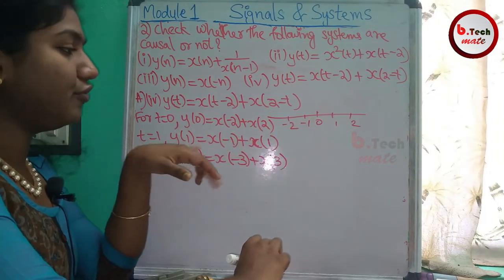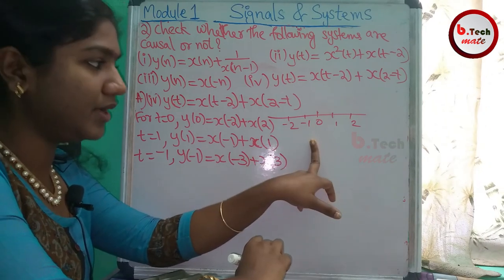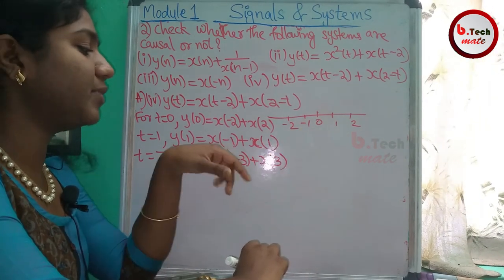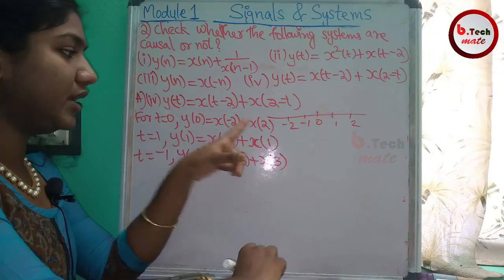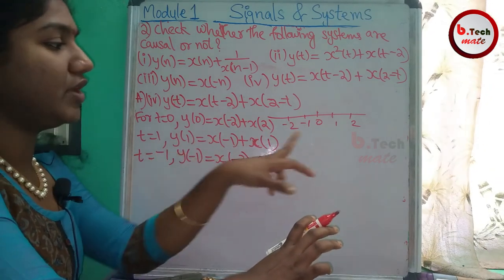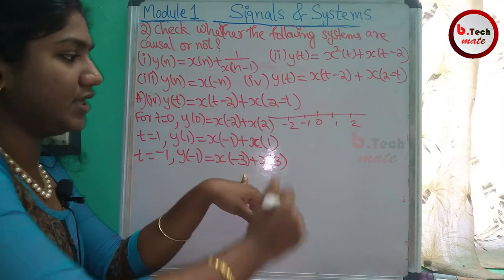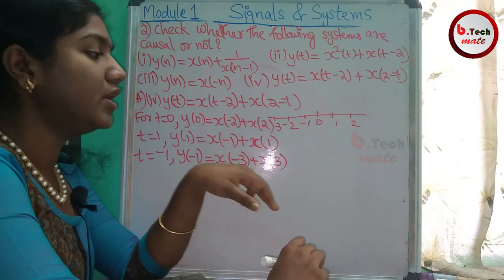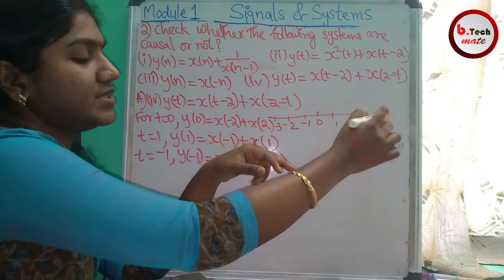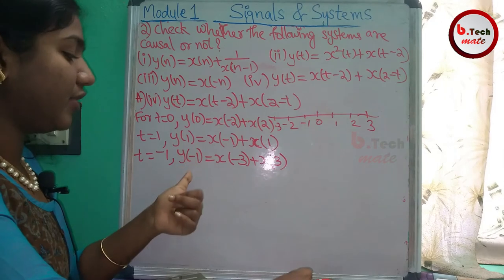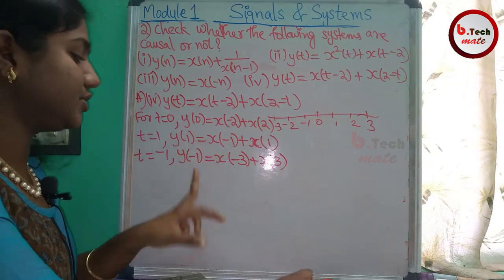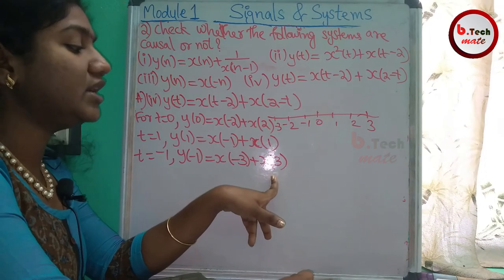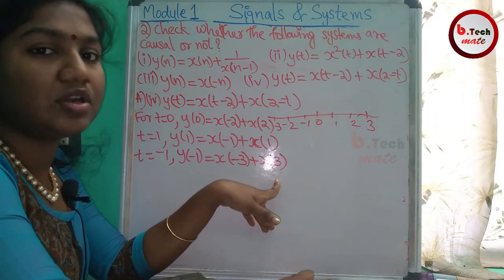Checking the conditions: for y(1), it depends on x(-1) which is past input, and x(1) which is present. For y(-1), it depends on x(-3) which is past, and x(3) which is a future input. Since the present output depends on future input x(3) and x(2), the system is non-causal.